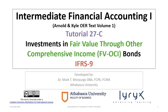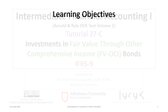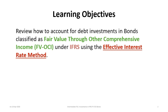Hello and welcome to Intermediate Financial Accounting 1 Tutorial 27C. This tutorial will cover investments in fair value through other comprehensive income, or FVOCI, bonds reporting under IFRS 9. This tutorial is a supplemental resource to the Arnold and Kyle Open Educational Resource text volume 1. The learning objective is to review how to account for debt investments in bonds classified as fair value through other comprehensive income or FVOCI under IFRS using the effective interest rate method, which is the only method allowable under IFRS.